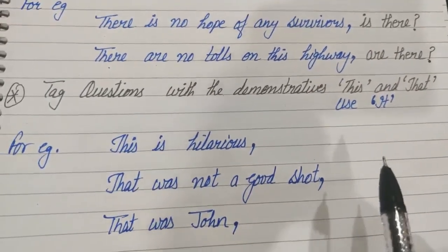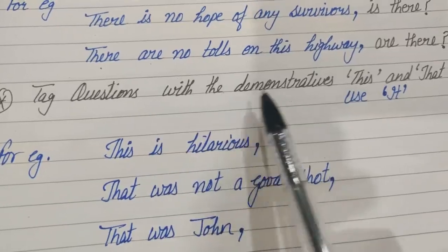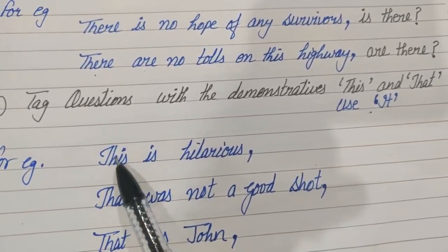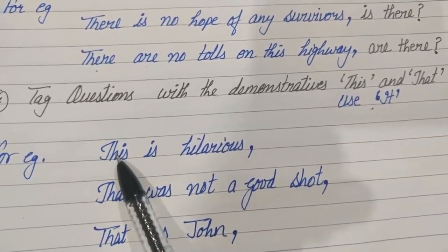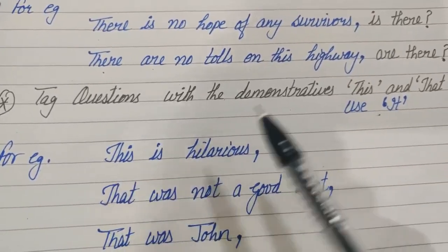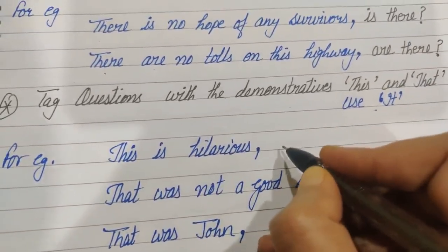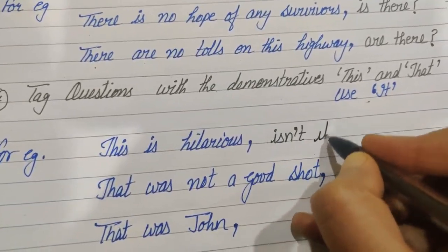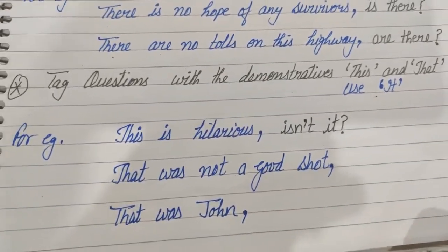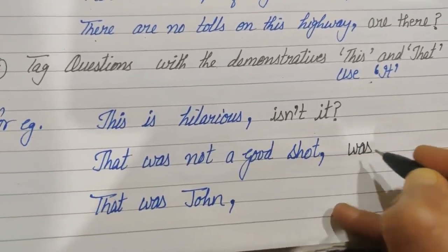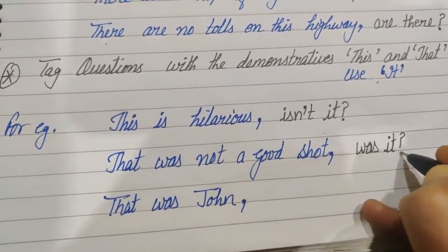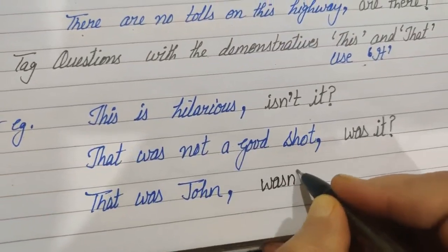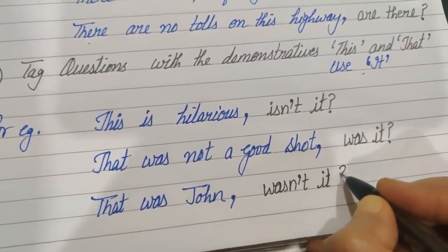The last rule: tag questions with demonstratives 'this' or 'that' — we use 'it.' If our sentence starts with a demonstrative pronoun, we use 'it' in place of 'this' or 'that.' For example: 'This is hilarious' — positive statement, so the negative tag becomes: isn't it? 'That was not a good shot' — negative statement, so the positive tag becomes: was it? 'That was John' — wasn't it?